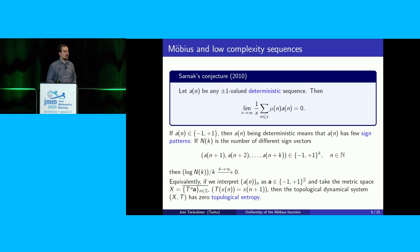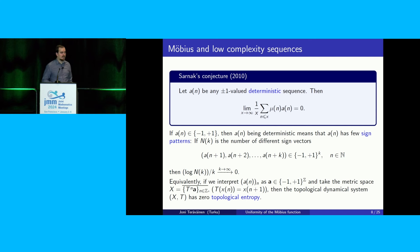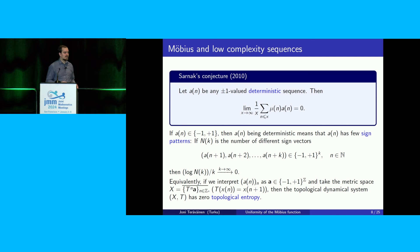An equivalent, more dynamical way of stating that your sequence is deterministic is to say that if you interpret this as a point in the space plus-or-minus-one to the power of the integers, and you take the topological closure of the shifts of this point, then this topological dynamical system (X, T) has zero topological entropy.